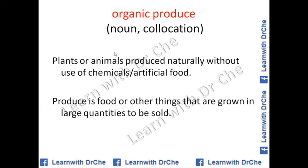Organic produce is a noun and collocation. It refers to plants or animals produced naturally without the use of chemicals or artificial food. 'Produce' means food or other things that are grown in large quantities to be sold. 'Organic produce' specifically means food or things grown in large quantities naturally, without chemicals or artificial means.